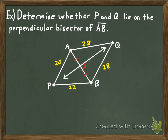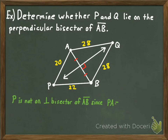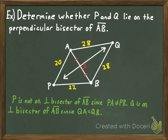P is not on the perpendicular bisector of segment AB since it is not equidistant from A and B - the distance from P to A does not equal the distance from P to B. However, Q is on the perpendicular bisector because QA equals QB. That's how you use the perpendicular bisector theorem and its converse. In the next video for this section, we'll look at perpendicular bisectors drawn from each of the three sides of a triangle and the properties involved. Thanks for watching - hope you've learned a lot, and I'll see you next time.